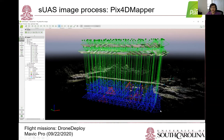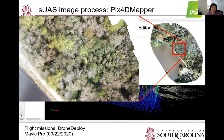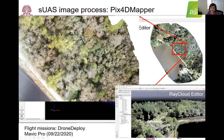Pix4D Mapper delivers two products. One is the orthomosaic of the whole study area. When zooming in, we can see all the details of tree crowns and individual trees because it is a high-resolution image. The second product is point cloud. In this point cloud editor, a tree is actually a combination of many 3D points with XYZ locations. For this example mission, we get 6.3 million points over the dam.